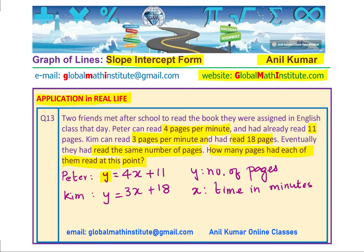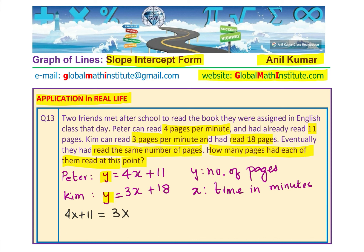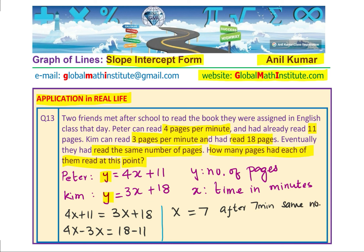Same number of pages means the two y-values should be equal. So let us equate them: 4x plus 11 equals 3x plus 18. Rearranging, we get 4x minus 3x equals 18 minus 11, which gives x equals 7. That means after 7 minutes, they have read the same number of pages.